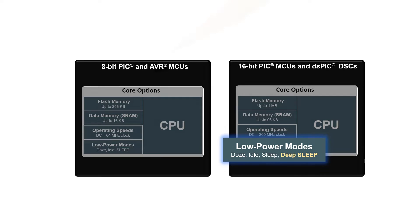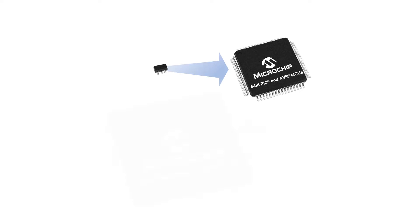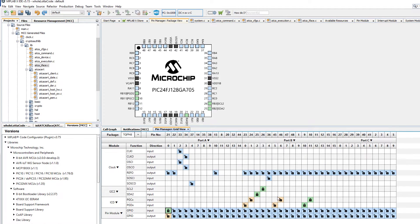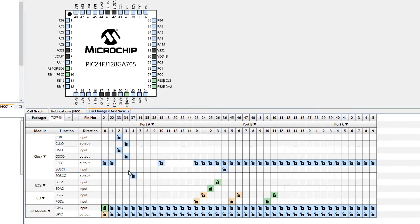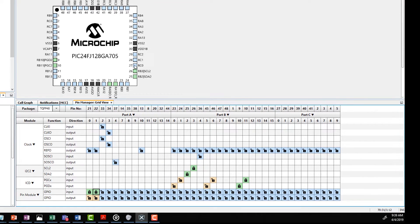8-bit microcontrollers are typically designed to be as small as possible while heavily integrating capabilities, with package pin counts ranging from as few as 6 pins to packages with 64 pins. However, there are instances where application requirements demand additional pins. In this instance, customers may wish to explore 16-bit devices which offer packages starting at 14 pins up to 144 pins. Both 8 and 16-bit architectures make it easier to migrate across platforms by providing flexible pin configuration of digital signals through the peripheral pin select functionality.